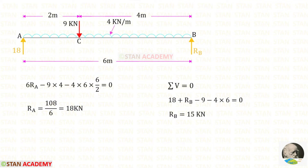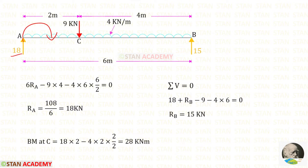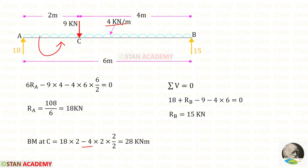Now let us apply sigma V equals zero to find RB. Now let us find the bending moment at point C from point A. RA is clockwise, positive, at distance 2. The UDL is anti-clockwise, negative; for the UDL we multiply with the distance and distance over 2. So for the bending moment at C we get 28 kilonewton meter.